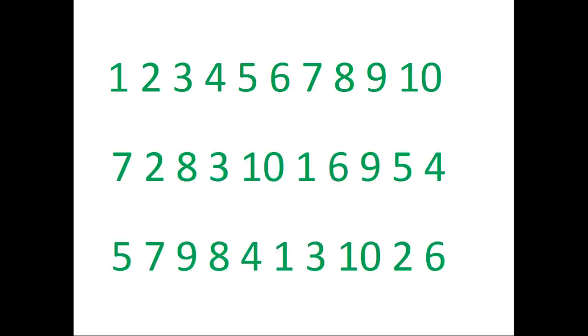Let's say for example we have the integers from 1 through 10. One possible rearrangement is 7, 2, 8, 3, 10, 1, 6, 9, 5, and finally 4. Another rearrangement is listed at the bottom of your screen. Now how many rearrangements are there in total? That's a job for permutations.